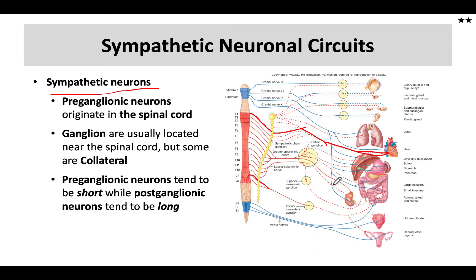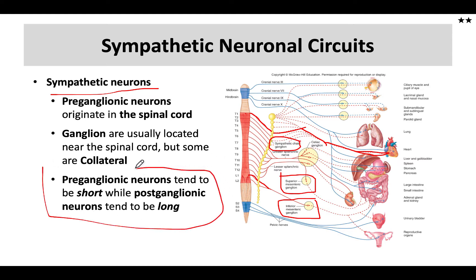There are a few ganglia not found in the chain, such as the mesenteric ganglion and the ciliary ganglion, but most are in this sympathetic ganglion chain that runs along the spinal cord. A key characteristic of sympathetic neurons is that we have a very short preganglionic neuron and a very long postganglionic neuron. The term 'collateral' simply means those ganglia are close to the target.